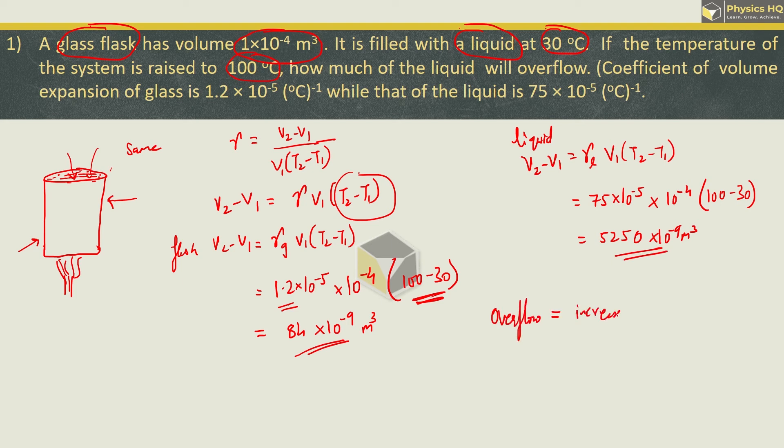That is equal to increase in volume of liquid minus increase in volume of the flask. So, liquid volume increased 5250 into 10 raised to minus 9, but the flask volume also increased 84 into 10 raised to minus 9. So the flask can store the additional liquid. The difference of extra liquid will overflow. So the difference will give us 5166 into 10 raised to minus 9 meter cube. This is the amount of liquid that will overflow. I hope you all understood this.